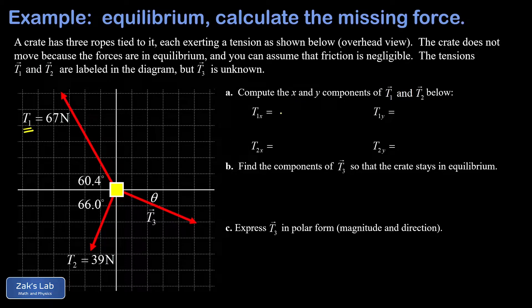The magnitude of that x component is 67 cosine 60.4, but I put a minus sign on that to indicate that it's leftward. When I run the numbers on this to three significant digits, I get negative 33.1 newtons.